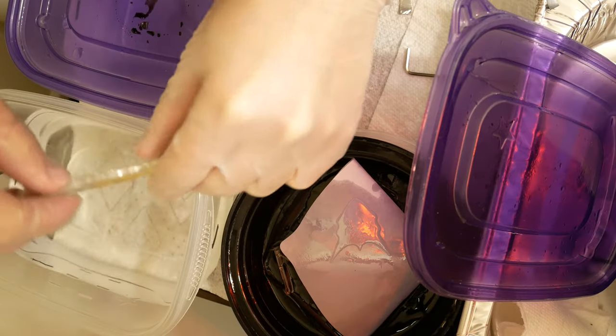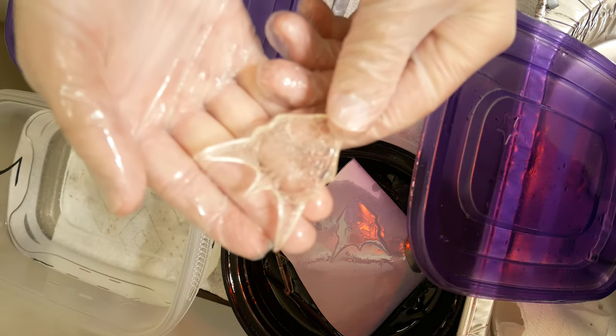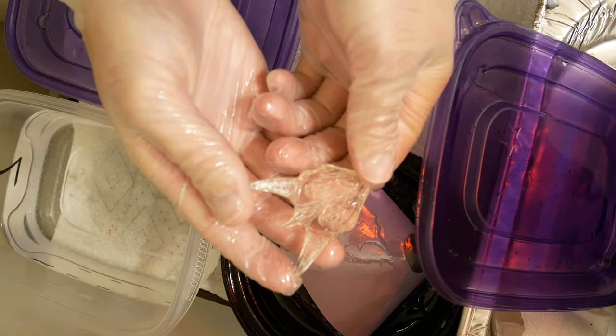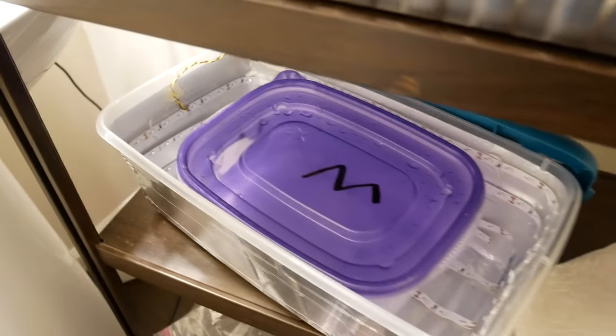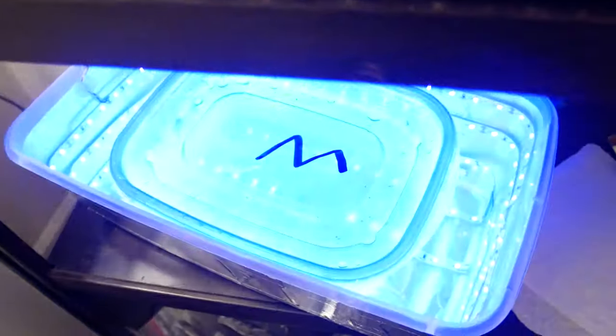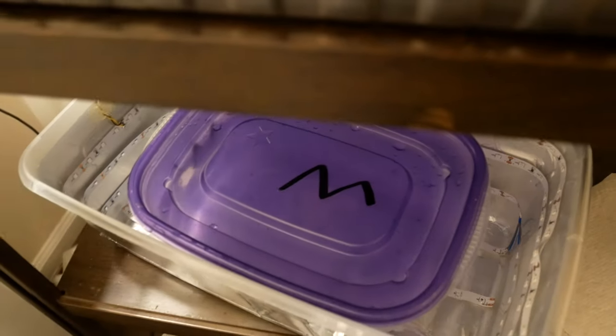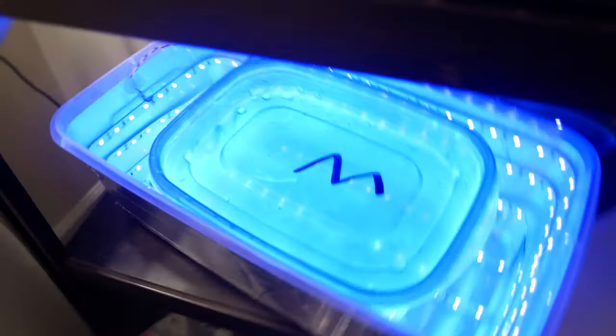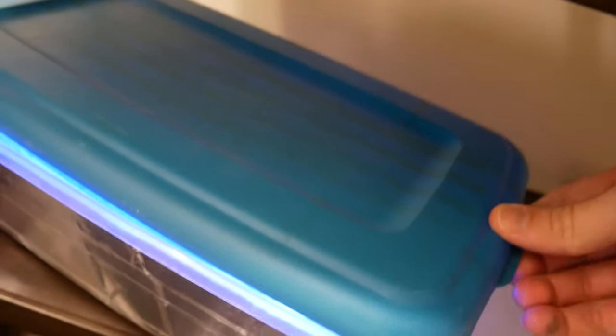And as for curing I built a homemade tupperware bin lined with aluminum tape and UV LED strips and a salvaged 12 volt power supply. And I always cure my prints underwater and what this does is I believe it stops oxygen from screwing with the curing process by essentially getting in the way of the oxygen because it's water. I find that this causes the print to cure much more evenly.